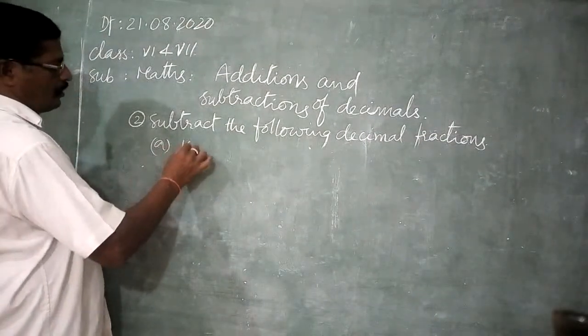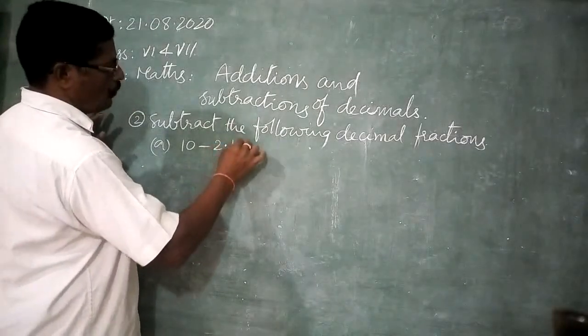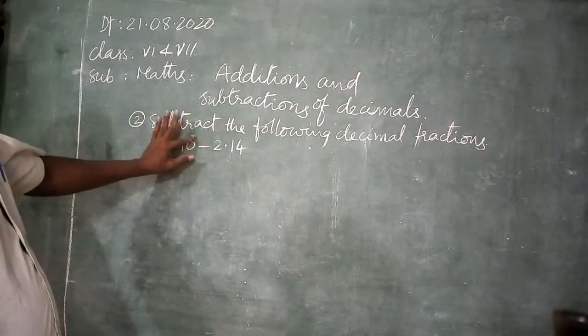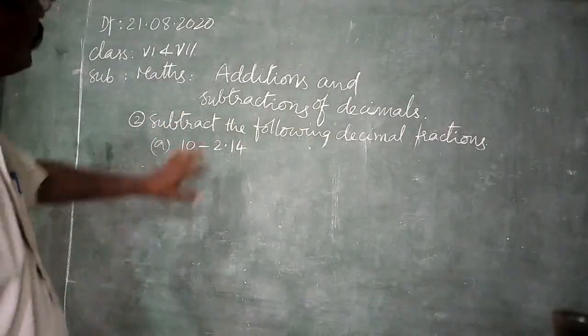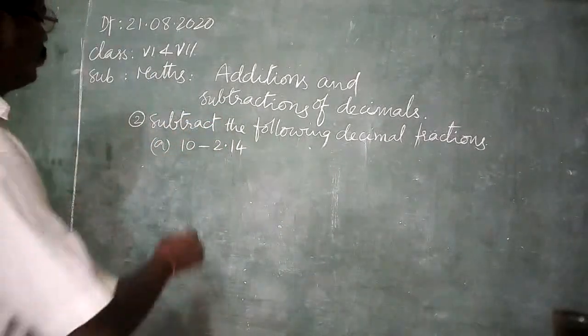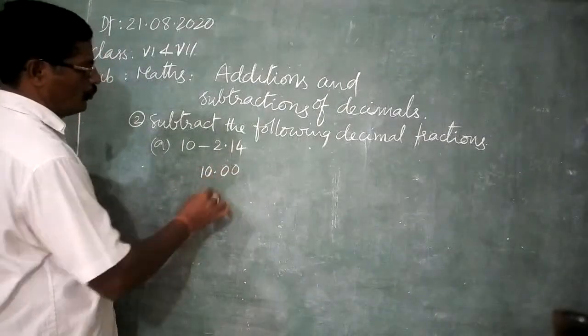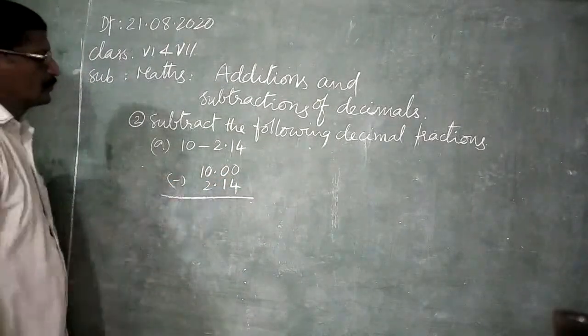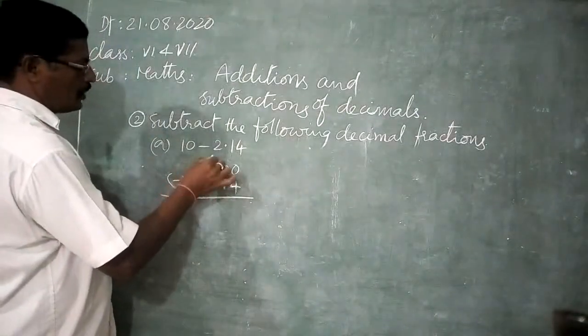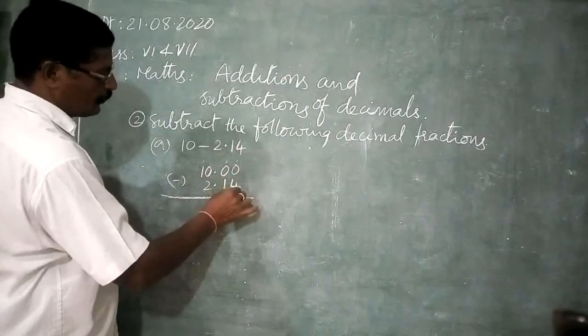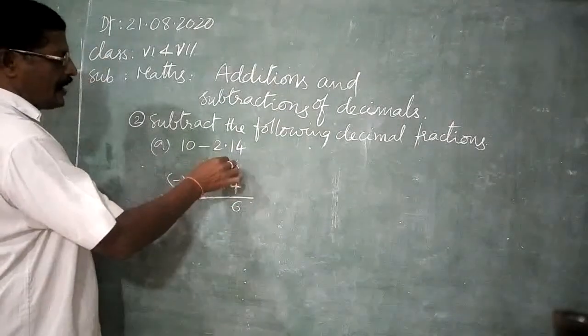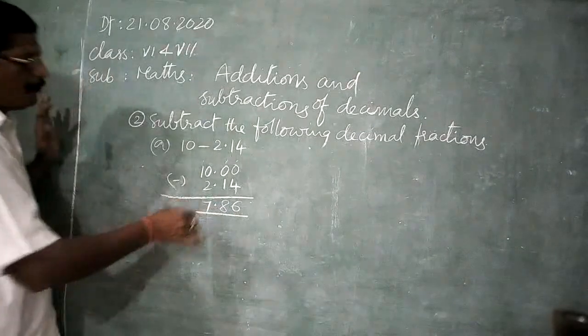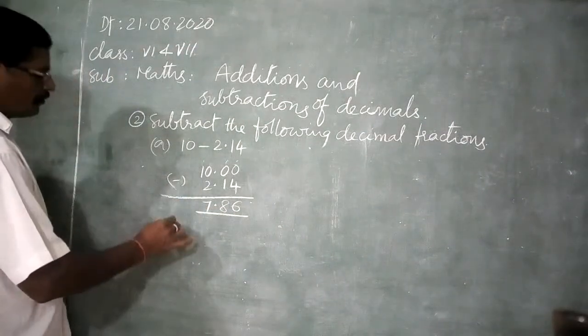First question. 10 minus 2.14. How to subtract? Here 10 is whole number. Whole part. Here 2 is in whole part. Now 10.00, 2.14. Now subtract. Minus. Borrowing from here to here and here to here. Now 10, 10 minus 4, 6. Here 9, 9 minus 1, 8. Here 9 minus 2, 7. 7.86 is the answer. Next. One more question.